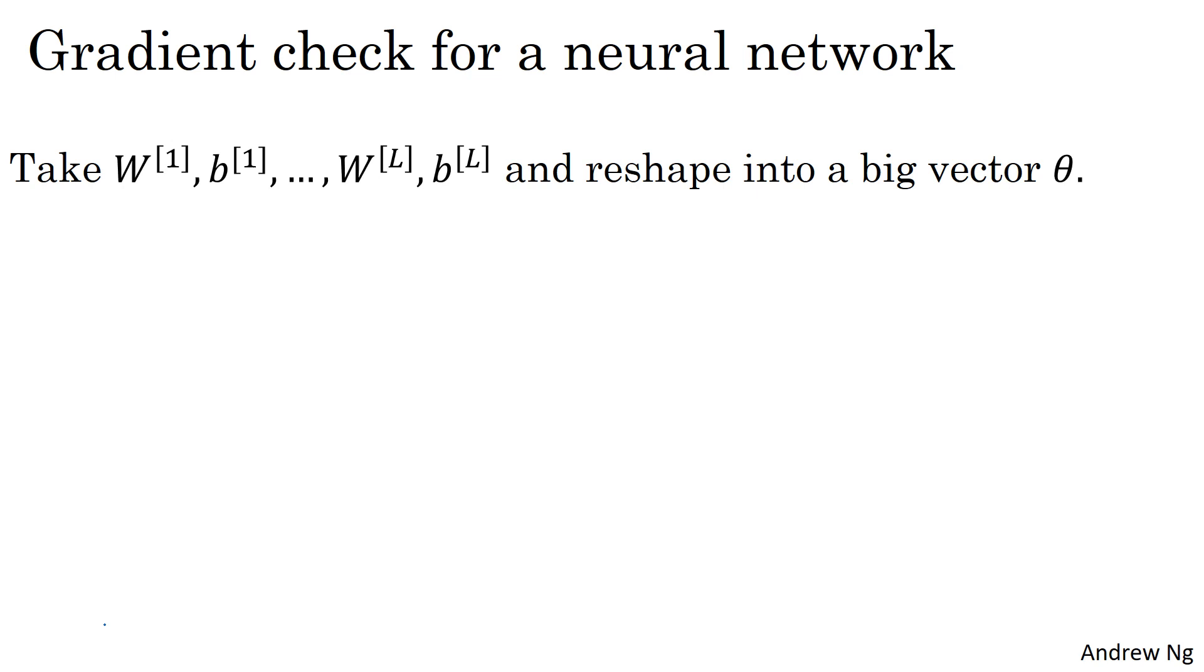Your neural network will have some set of parameters W1, B1, and so on up to WL, BL. So to implement gradient checking, the first thing you should do is take all your parameters and reshape them into a giant vector theta.